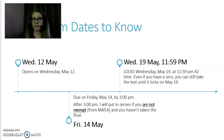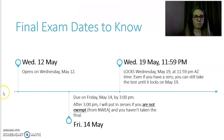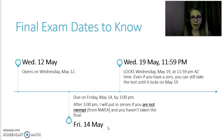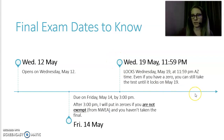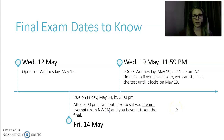Final exam dates to know: Wednesday, May 12th is when it opens. Friday, May 14th is when it's due by 3 p.m. I will be entering zeros after 3 p.m. if you are not exempt because of your NWEA score and you haven't taken the final. However, it doesn't lock until Wednesday, May 19th. So you can still take the test until then — even if you have a zero entered — as long as you take it before the unit locks on May 19th, then you can still earn credit for it.